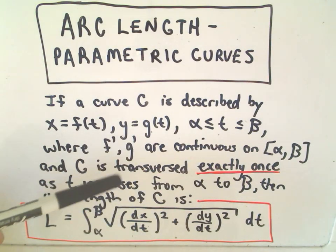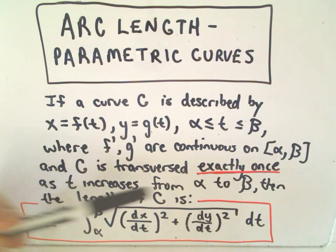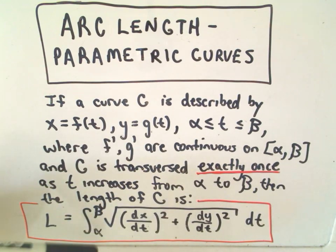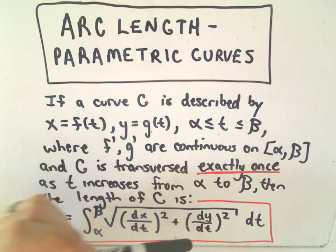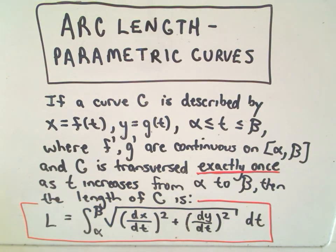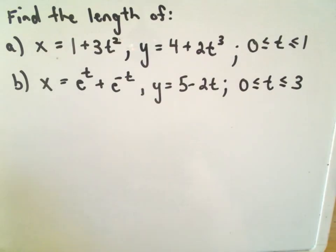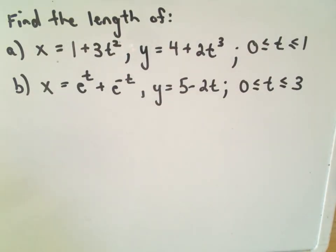It says if the curve is transverse exactly once as t increases from alpha to beta, then the length of the curve is we integrate from alpha to beta, take the square root of the quantity dx dt squared plus dy dt squared. So let's talk about a couple of these. I'm going to do two examples.